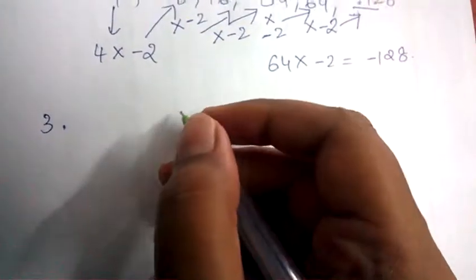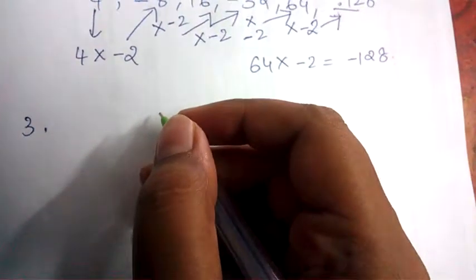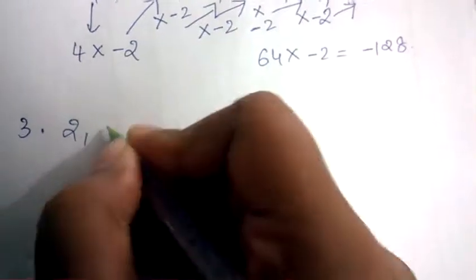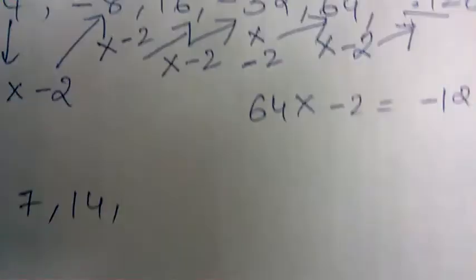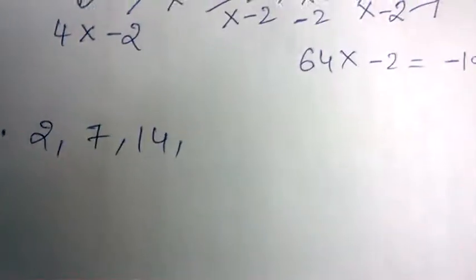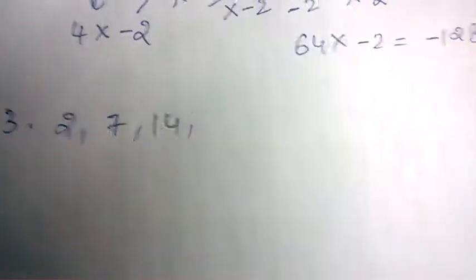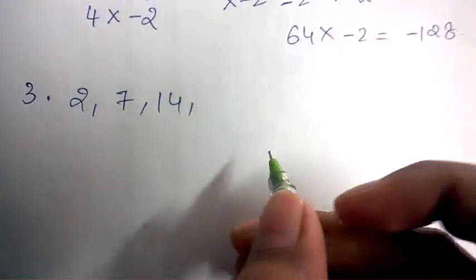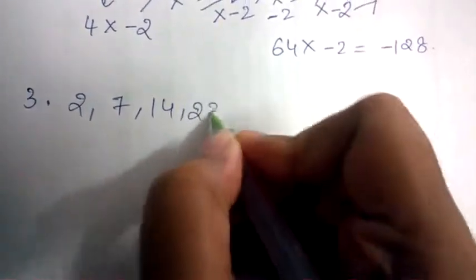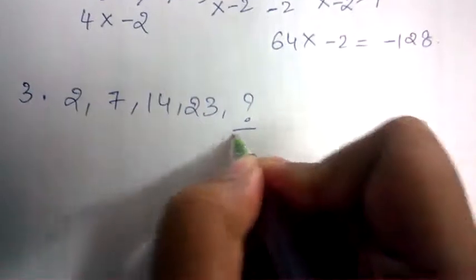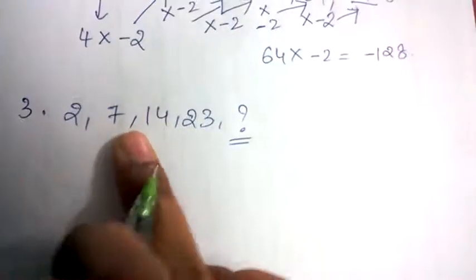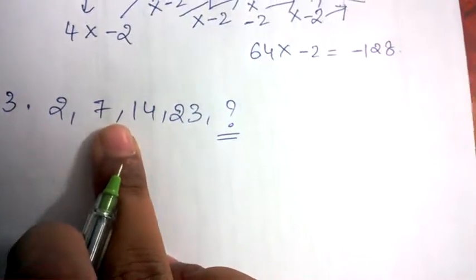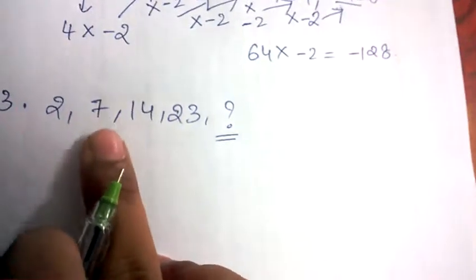Let's see another example: find the numbers in the given series. The series is: 2, 7, 14, 23, question mark. We have to find what number comes in this position.